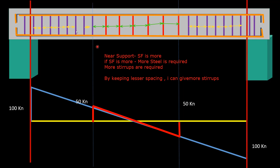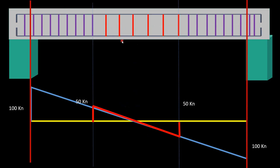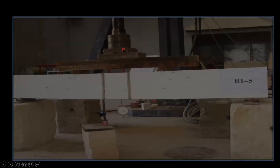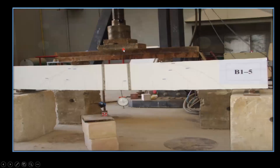So in this middle portion practically you don't require any stirrup structurally, but you cannot skip them entirely keeping the execution point of view. So what we try to do is we increase the spacing here. I hope you are able to understand most of the things. Now coming to the practical thing.